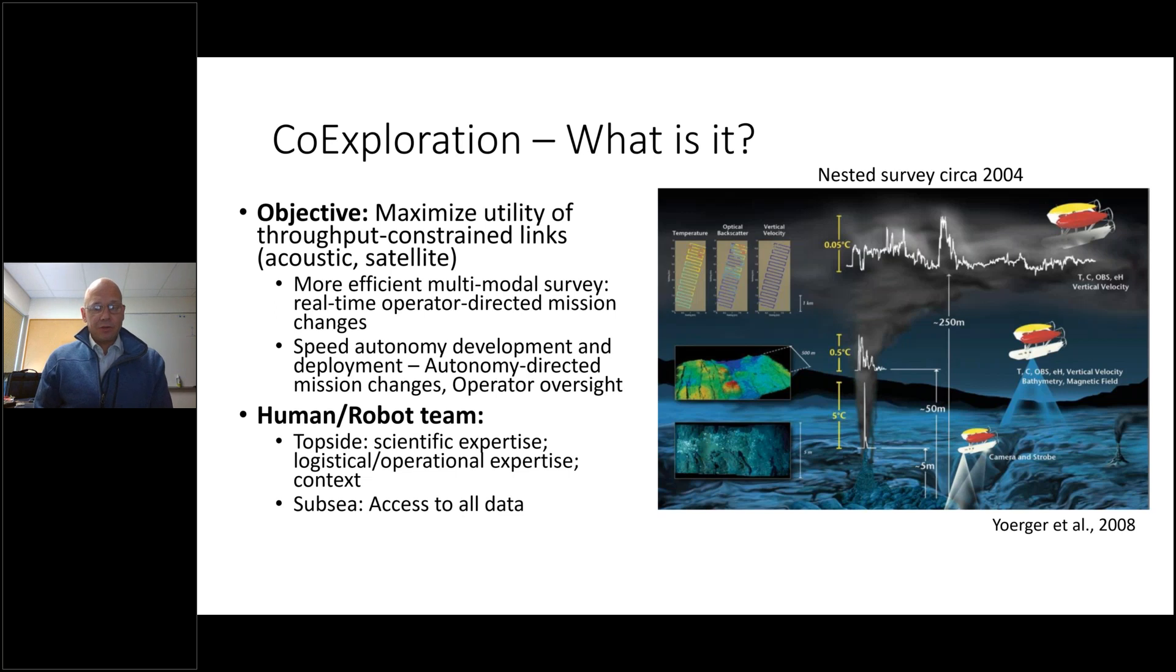The grounding idea behind this is that humans and robots can act as a team because they each bring strengths to the problem of exploration in the deep sea. Topside, we have extensive scientific expertise, logistical and operational expertise of the vehicle team, as well as the context of a research cruise. On the other hand, we don't have access to the data in real time typically, whereas the vehicle does, has access to all the data that it's collected. I'll return to this figure on the right in a moment, but for me, it's provided really the inspiration for how we've structured this work, and is a classical example of nested survey in the deep sea to find hydrothermal venting on the sea floor.